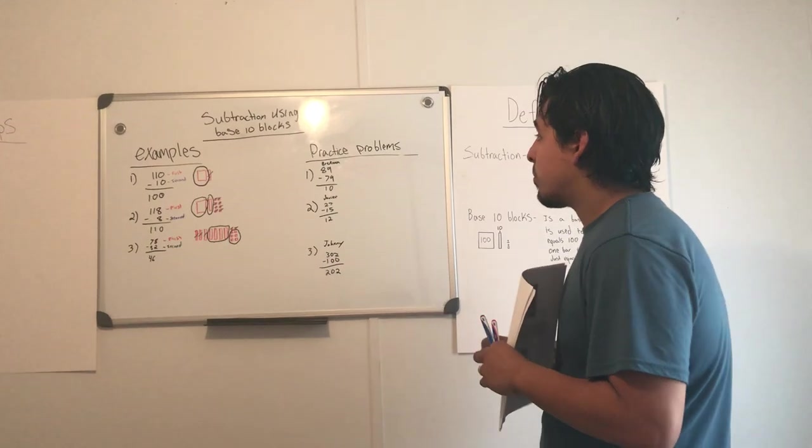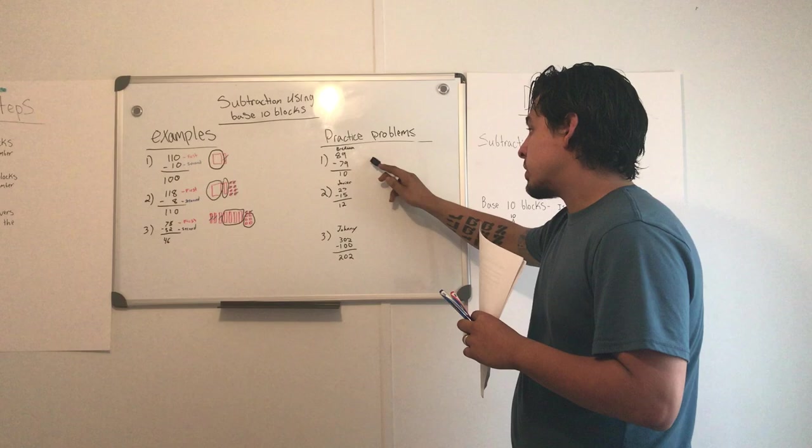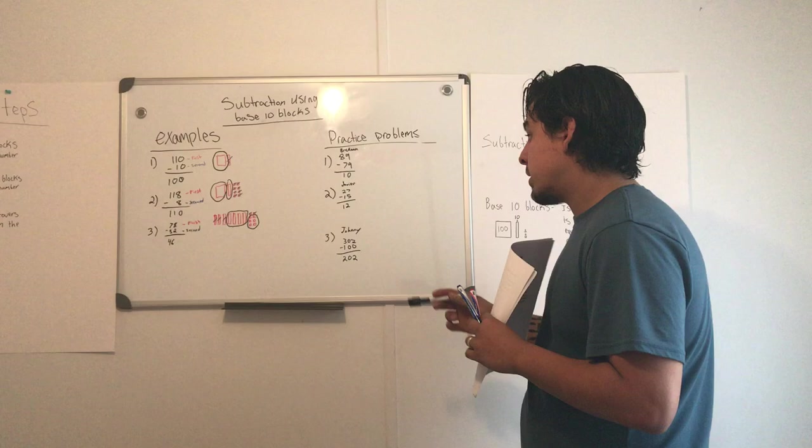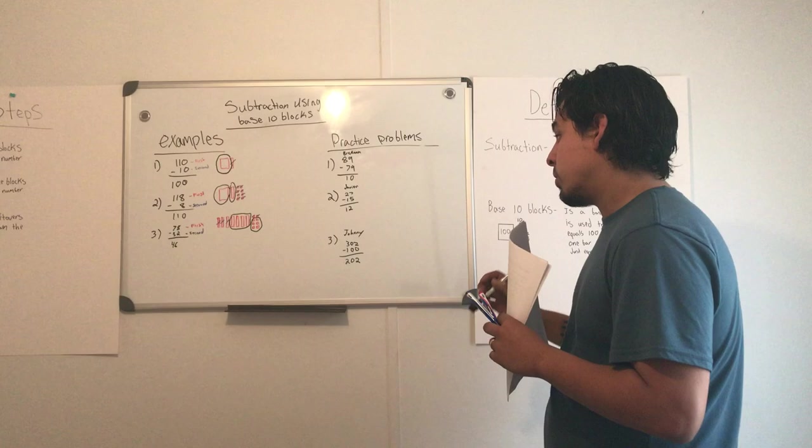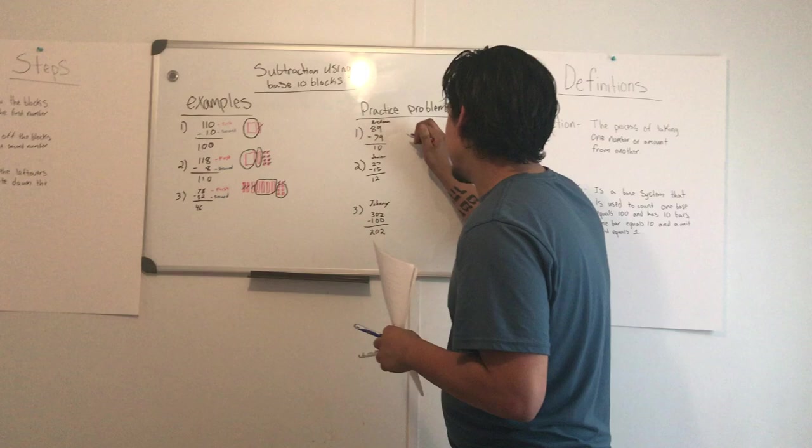Okay, for the practice problems, we had three volunteers come up here: Brianna, Javier, and Johnny. For Brianna, she got 10 for the question 89 minus 79. And Javier got 12 for 27 minus 15. And Johnny got 202 for 302 minus 100. The way Brianna got this answer was she drew the blocks for her first number.